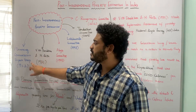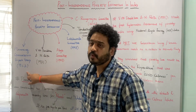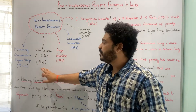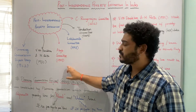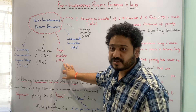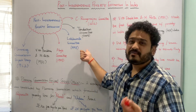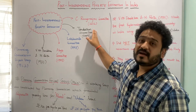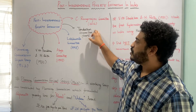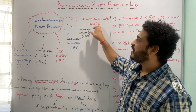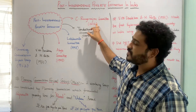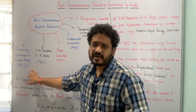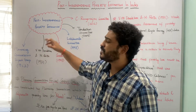The first committee was the Planning Commission's expert group, constituted in 1962. Thereafter, we have a committee by V. M. Dandekar and N. Rath in 1971. Then we move to the Alak Committee, constituted in 1979. Thereafter, we have the Lakhdawala Committee, with poverty estimation done in 1993. Then we have the very famous Tendulkar Committee in 2009, and an equally important committee chaired by S. Rangarajan in 2012. These are the different committees constituted in the post-independence period to look at poverty in the Indian context.